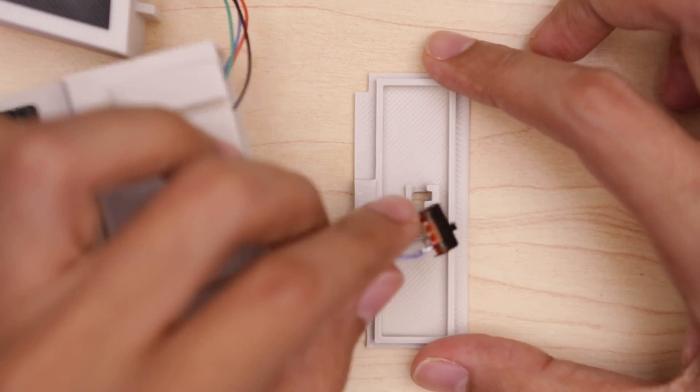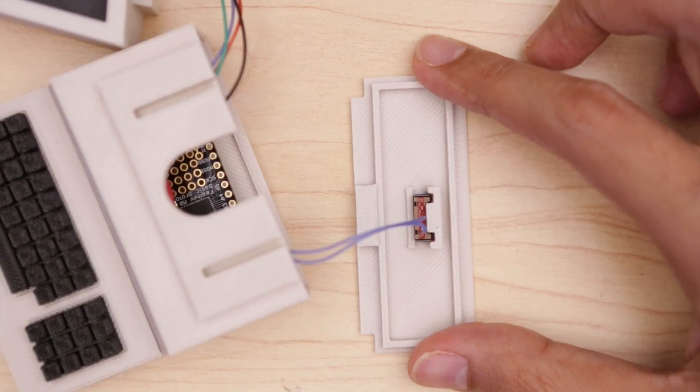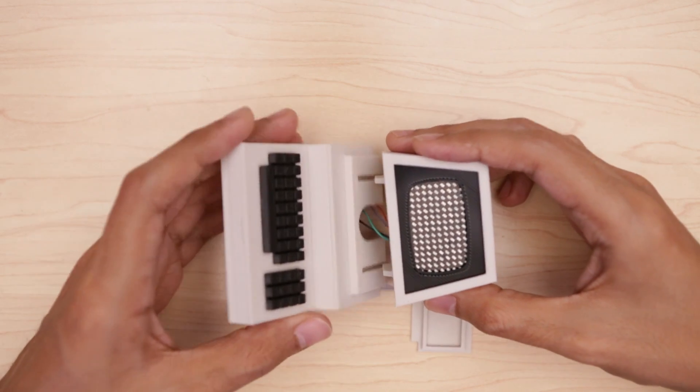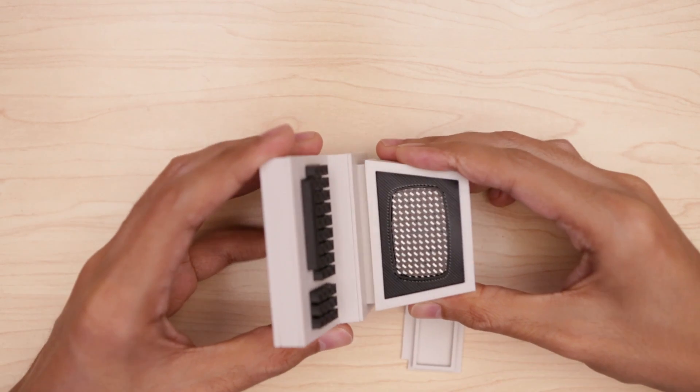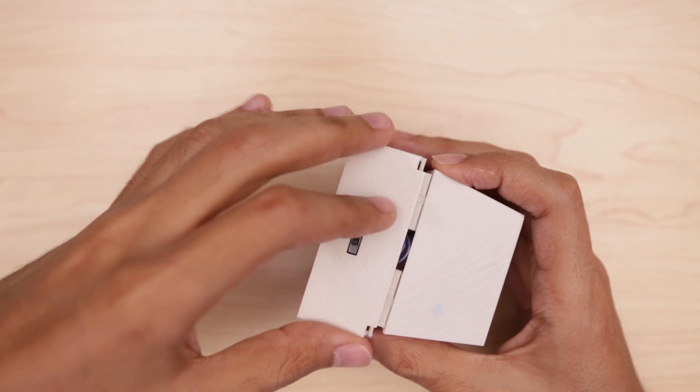Insert the slide switch into the holder of the enclosure back cover. The display frame has two keys that fit into the slots of the display frame. The back cover with the slide switch can then fit into the back of the enclosure.